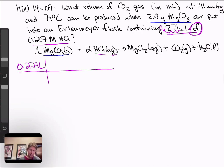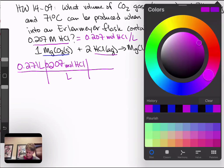I'm going to translate 0.207 molarity HCl - that equals 0.207 moles of HCl per liter. Now 0.207 moles of HCl per liter, and that's going to give me moles of HCl.